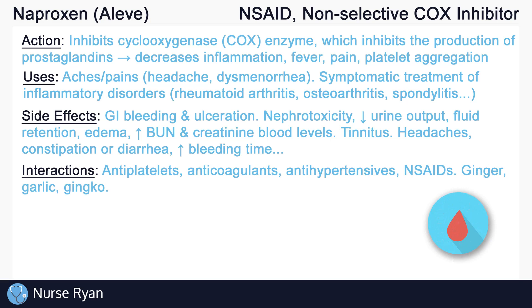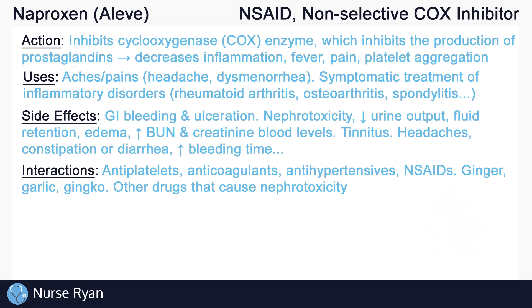Ginger, garlic, and ginkgo may also increase the risk for bleeding. Other drugs that cause nephrotoxicity, or drugs that cause gastric ulceration, may have these effects increased with naproxen.